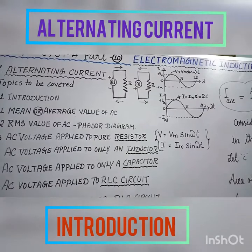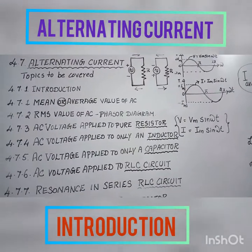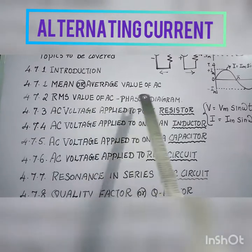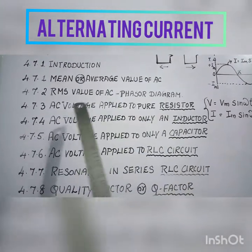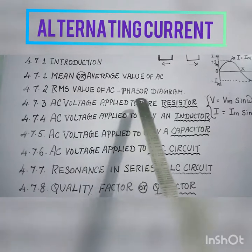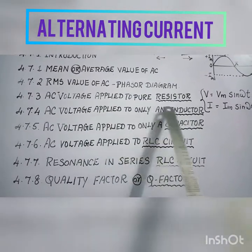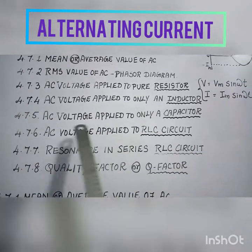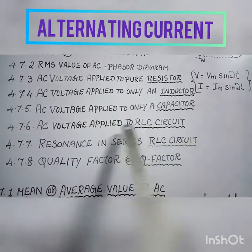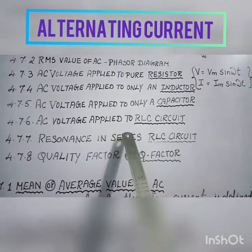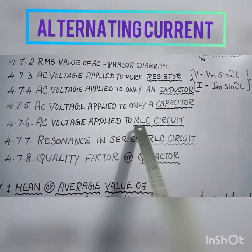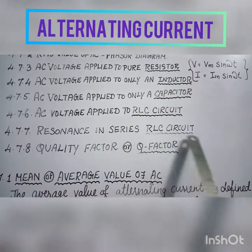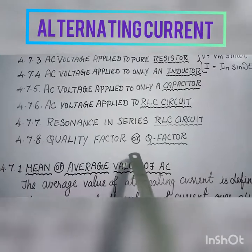Now the topics to be covered: first, introduction of alternating current and mean or average value of alternating current; RMS values of alternating current and phasor diagrams; AC voltage applied to a pure resistor; AC voltage applied to only an inductor; AC voltage applied to only a capacitor; AC voltage applied to a resistor, inductor, and capacitor in series connection; resonance in the series RLC circuit; and quality factor or Q factor.